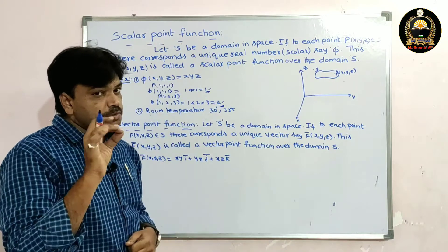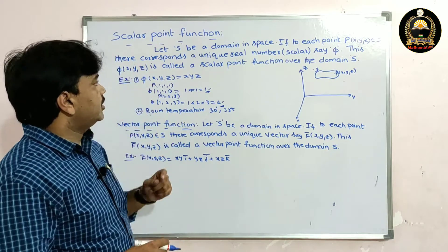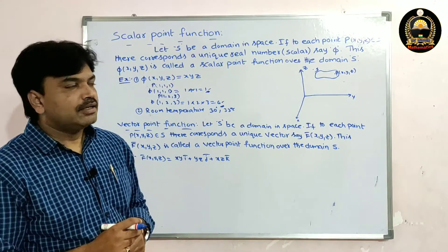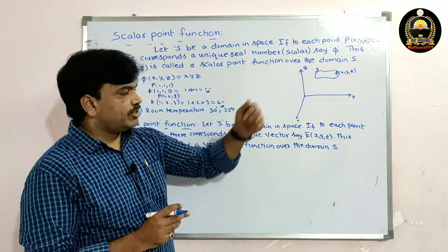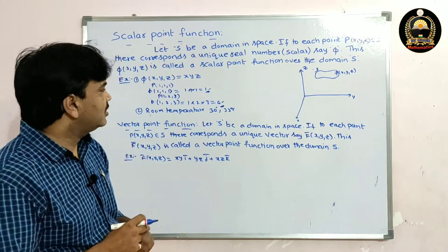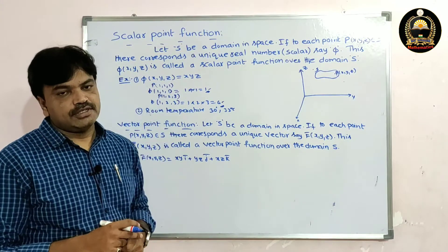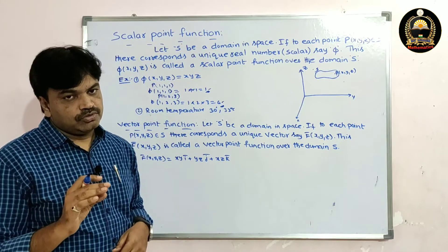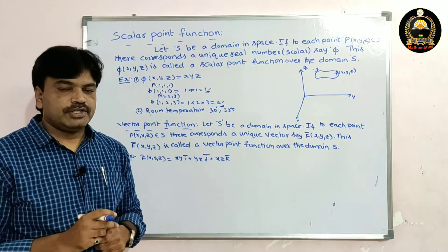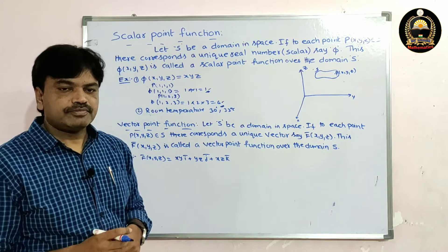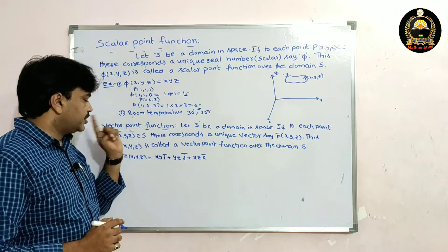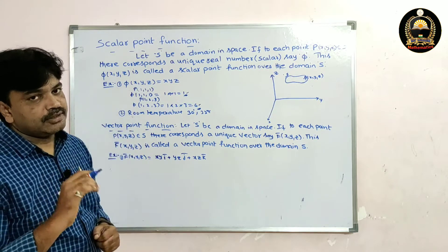Once again: let S be a domain in space. If to each point P there corresponds a unique real number φ, then φ is called a scalar point function. For example, φ(x, y, z) = xyz — it is a magnitude with no direction, so φ is called a scalar point function.